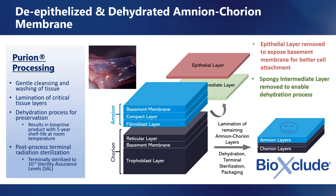BioExclude is a de-epithelialized and dehydrated amnion-chorion membrane created with a patented Purion processing method. Following procurement in a sterile environment, the amniotic sac undergoes a gentle cleansing and washing. The epithelial layer of the amnion is removed to expose the basement membrane, allowing for better cellular attachment. The spongy intermediate layer that sits between the amnion and chorion is also removed to facilitate the dehydration process. The remaining amnion and chorion layers are placed back together to create an amnion-chorion laminate. Following dehydration, the membranes are cut into defined dimensions, placed into individual packets, terminally sterilized, and packaged for distribution.